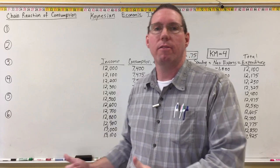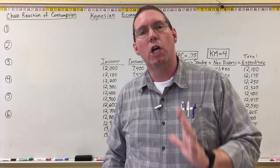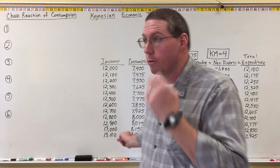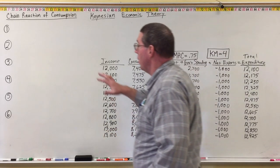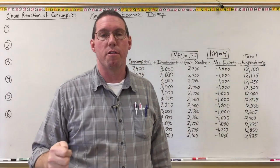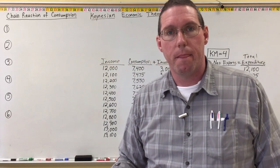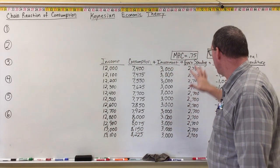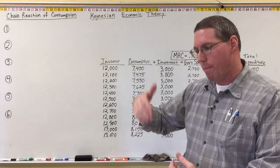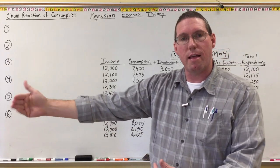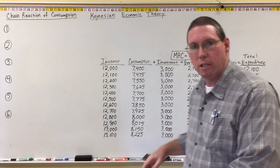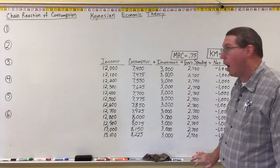What's happening behind the scenes, behind the numbers, to cause consumption to increase by $300 billion in this particular example? The basic idea is there is a chain reaction of consumption spending. The initial injection in government spending sets off a domino effect where there's going to be a whole bunch of spending caused in the economy after the government initially spends its extra $100 billion.